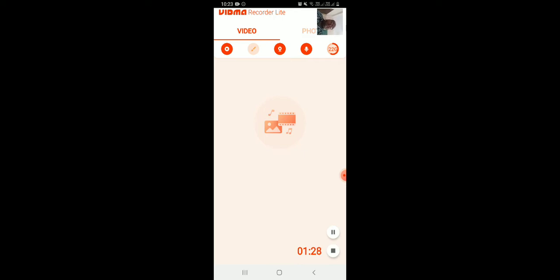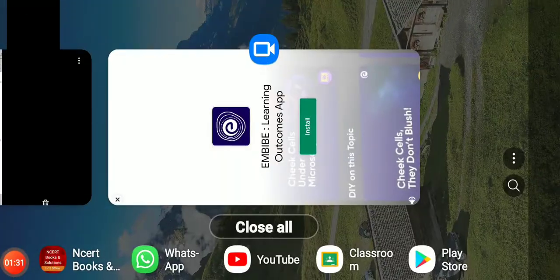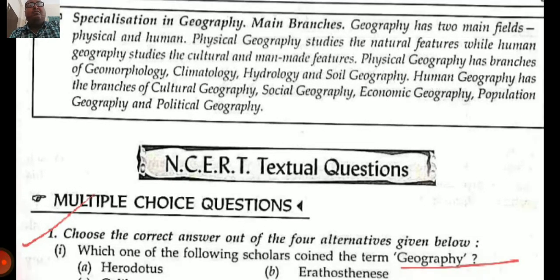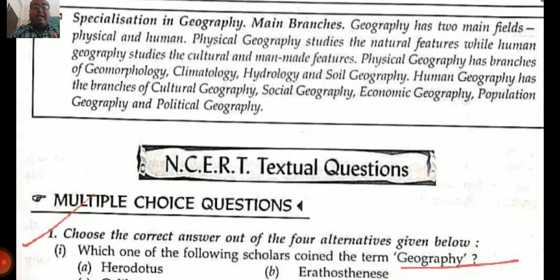In part one, we understood what geography is, what the different branches of geography are, and how geography is important. We also understood who is known as the father of geography. Next, we looked at the questions that a geographer always raises to solve problems: What, Where, and Why. What refers to identifying a specific feature — for example, is this a mountain, a plateau, or a plain? For a good geography student, locational analysis plays a very important role.